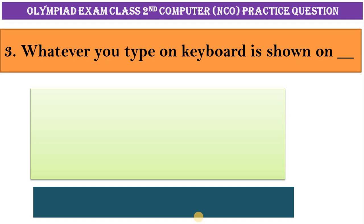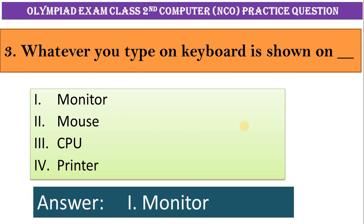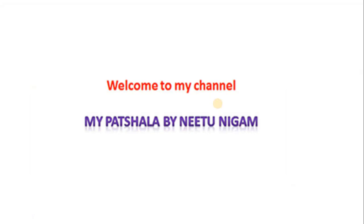Question number three: whatever you type on keyboard is shown on: one, monitor. Two, mouse. Three, CPU. Four, printer. Correct answer is option A, monitor.